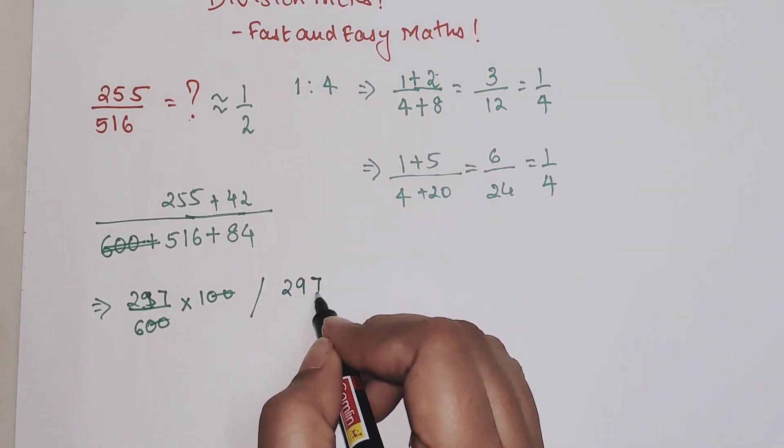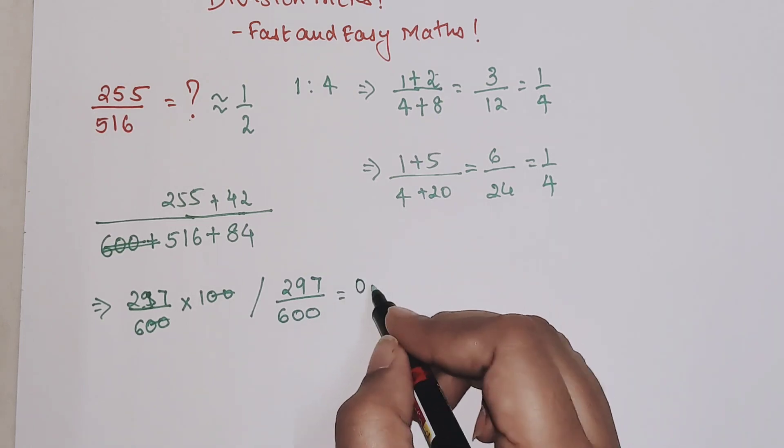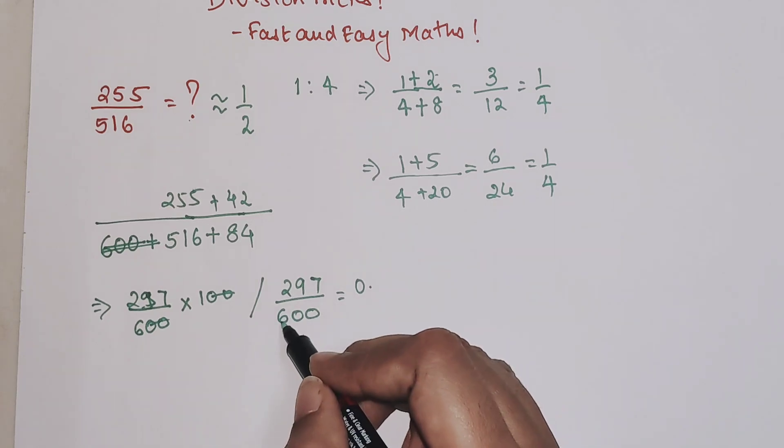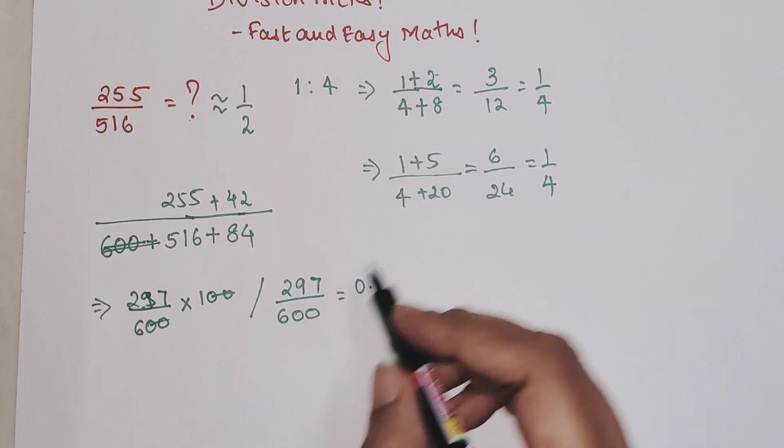We know that your answer will be in the form of 0.something. Let's do 6 divided by 297, so your first digit would be 4.